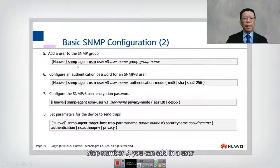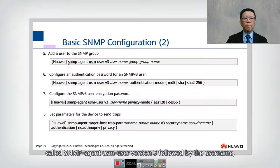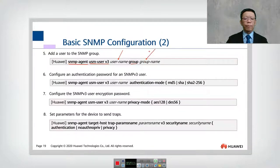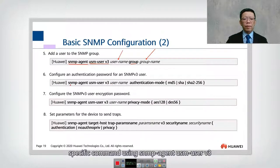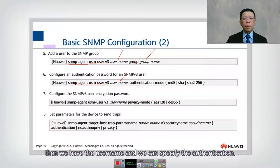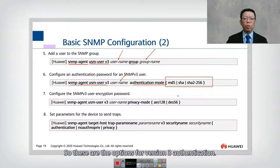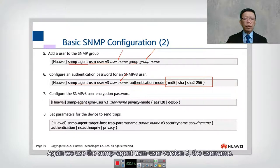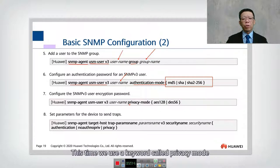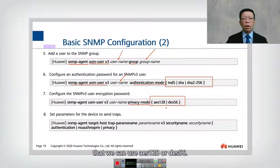Step 5, add a user for version 3 using the command 'snmp-agent usm-user v3' followed by the user name and group. Step 6, configure authentication using 'snmp-agent usm-user v3' with the user name and authentication mode — this is version 3 specific. Step 7, configure encryption using 'snmp-agent usm-user v3' with the user name and the keyword 'privacy mode'. The encryption options are AES-128 or DES-56.